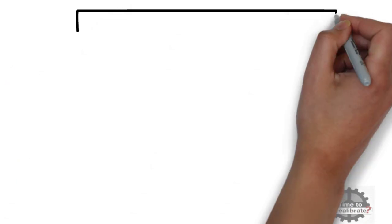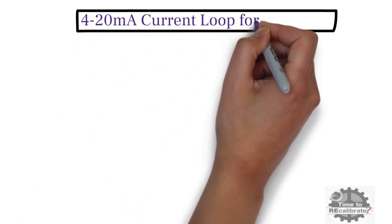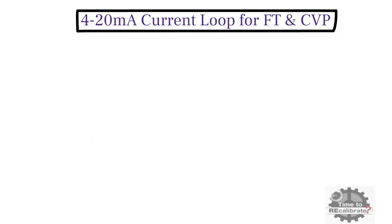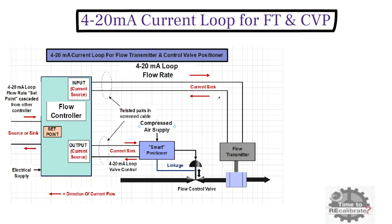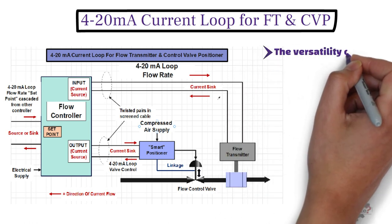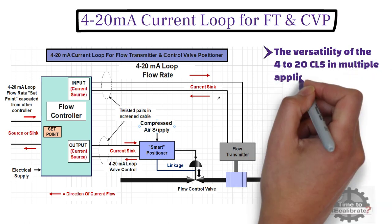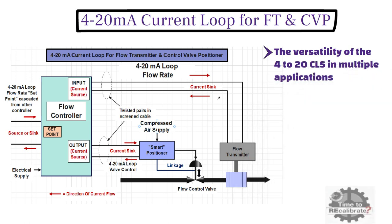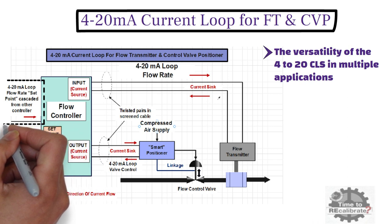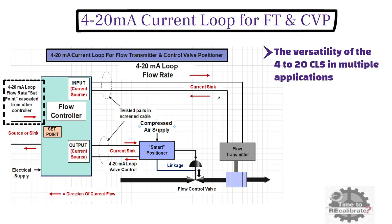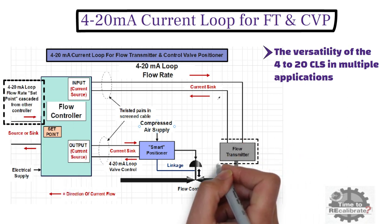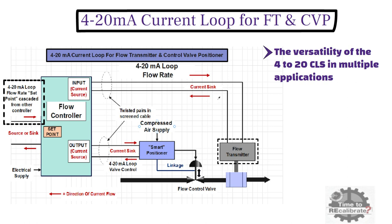Now, let's take one example of 4 to 20 mA current loop for flow transmitter and control valve positioner. As you can see, this example shows the versatility of the 4 to 20 mA current loop system in multiple applications. For example, it can be used to cascade a setpoint from another controller, and it can both control and supply power to passive field devices which sync the current.